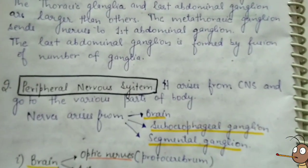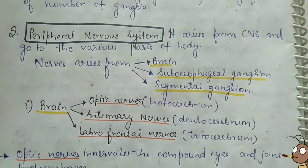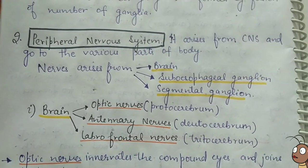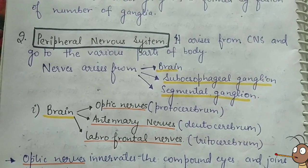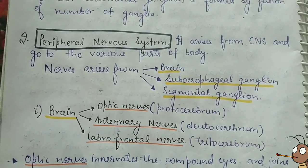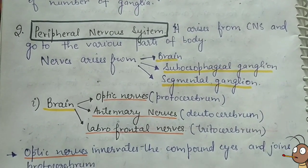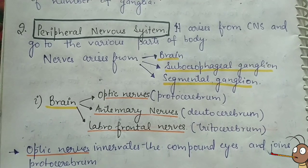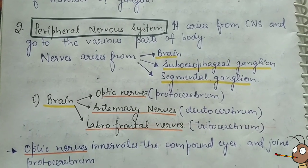So we are done with the central nervous system, which comprises the supraesophageal ganglion, subesophageal ganglion, circumesophageal connective, and the nerve cord. Now the second is the peripheral nervous system. The peripheral nervous system arises from the central nervous system and goes to the various parts of the body.